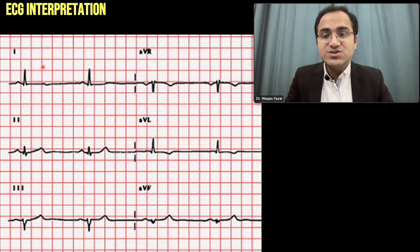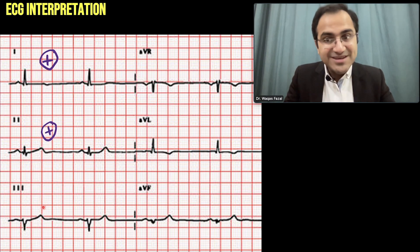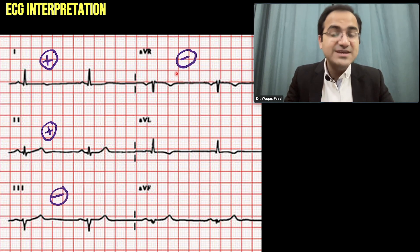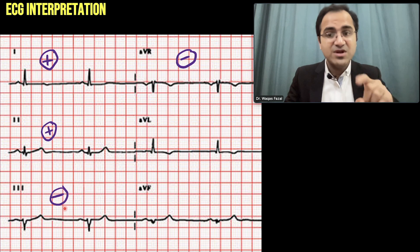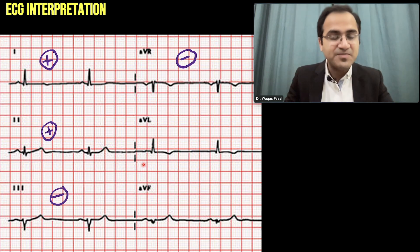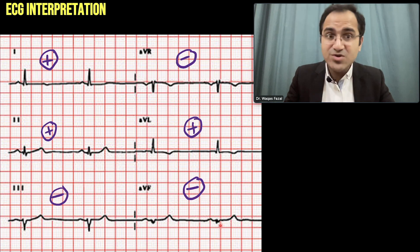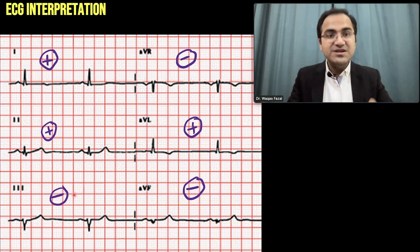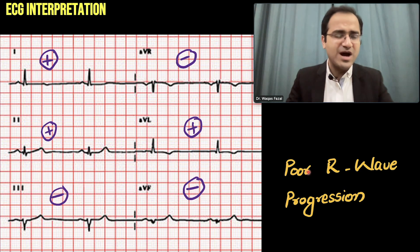In this ECG, lead 1 shows positive deflection and lead 2 also shows positive deflection. However, lead 3 is showing negative deflection of the R wave, which is not normal — it should be positively deflected. AVR is deflected downward, which is normal. AVL is positively deflected, which is normal. But AVF is negatively deflected, which is not normal — it should be positively deflected. Since lead AVF and lead 3 are negatively deflected, this is a poor R wave progression.